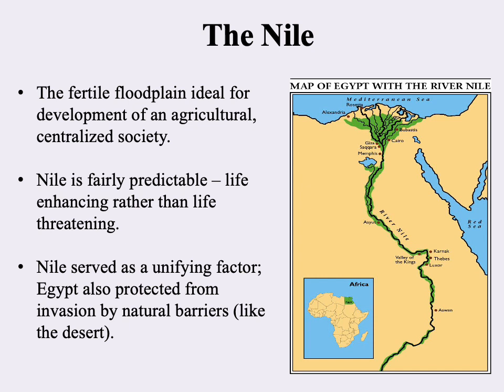One clarification: if you hear the terms upper and lower Egypt, we're used to seeing maps with North on top and South on the bottom. But upper Egypt actually reflects the idea of working your way into the interior. So lower Egypt would be on top if you're looking at the map, and upper Egypt on the bottom. The Nile is one of the few rivers in the world that actually flows from South to North.